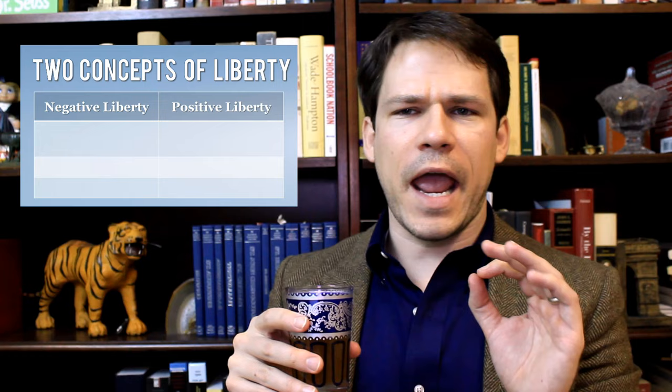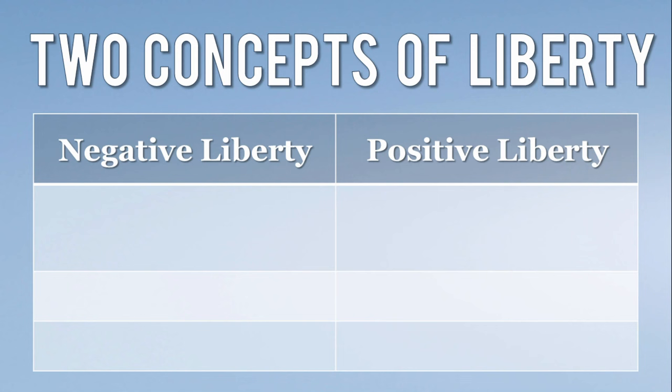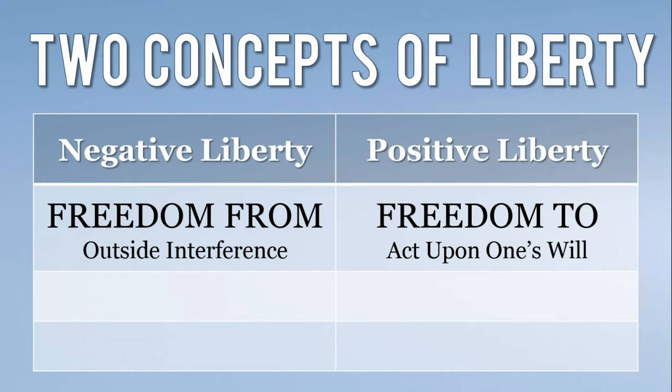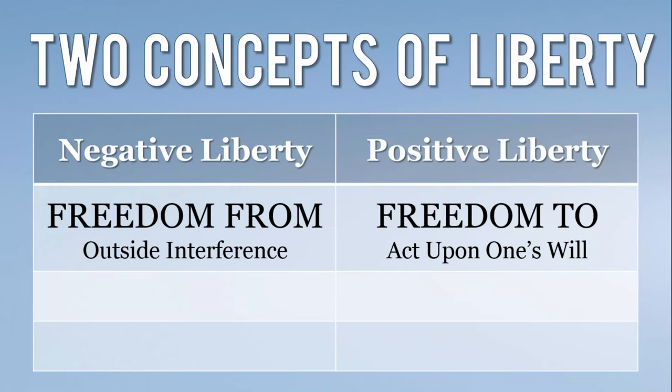Let's go ahead and look at these two concepts of liberty: negative liberty and positive liberty. Negative liberty can be defined as the freedom from outside interference — the operative word being 'from' — whereas positive liberty is the freedom to act upon one's will, the operative word being 'to.' The distinction here is freedom from something and freedom to be able to do something.